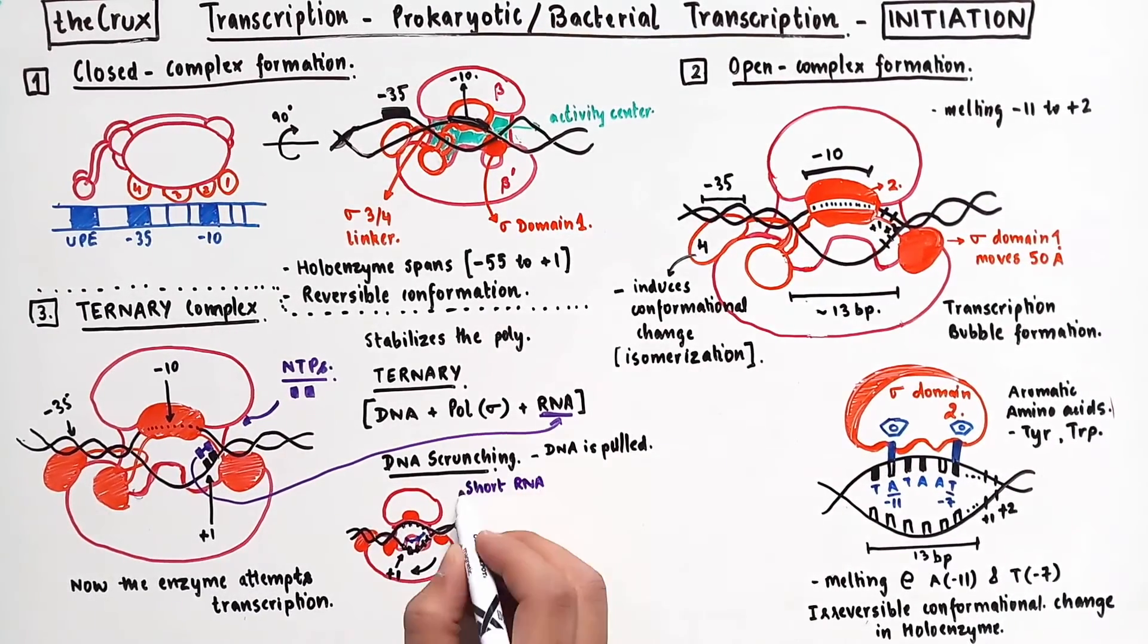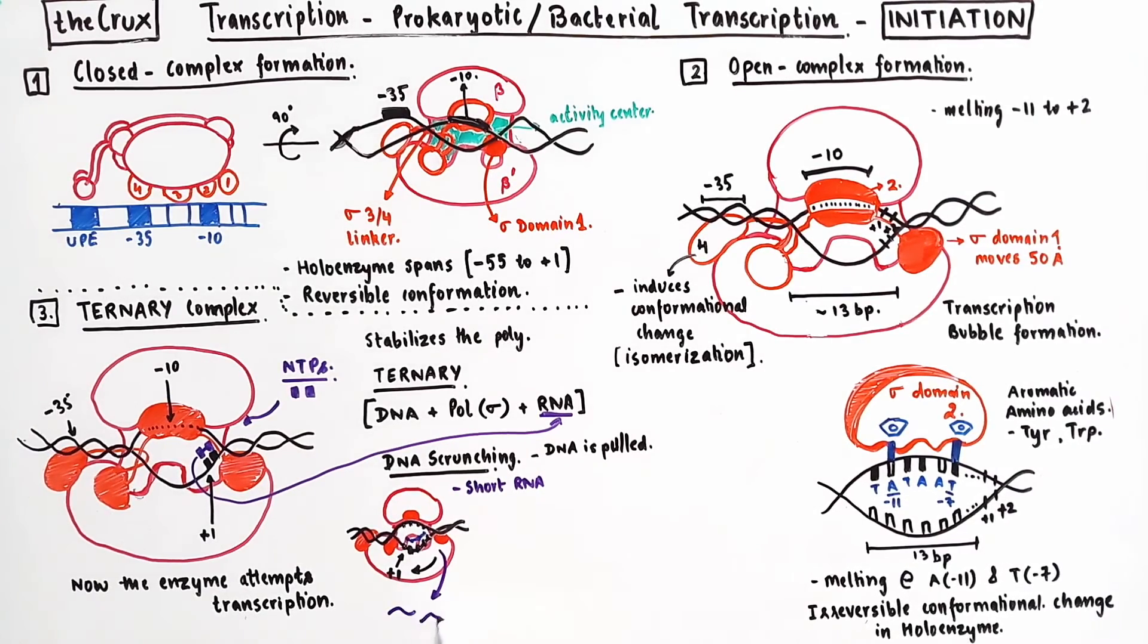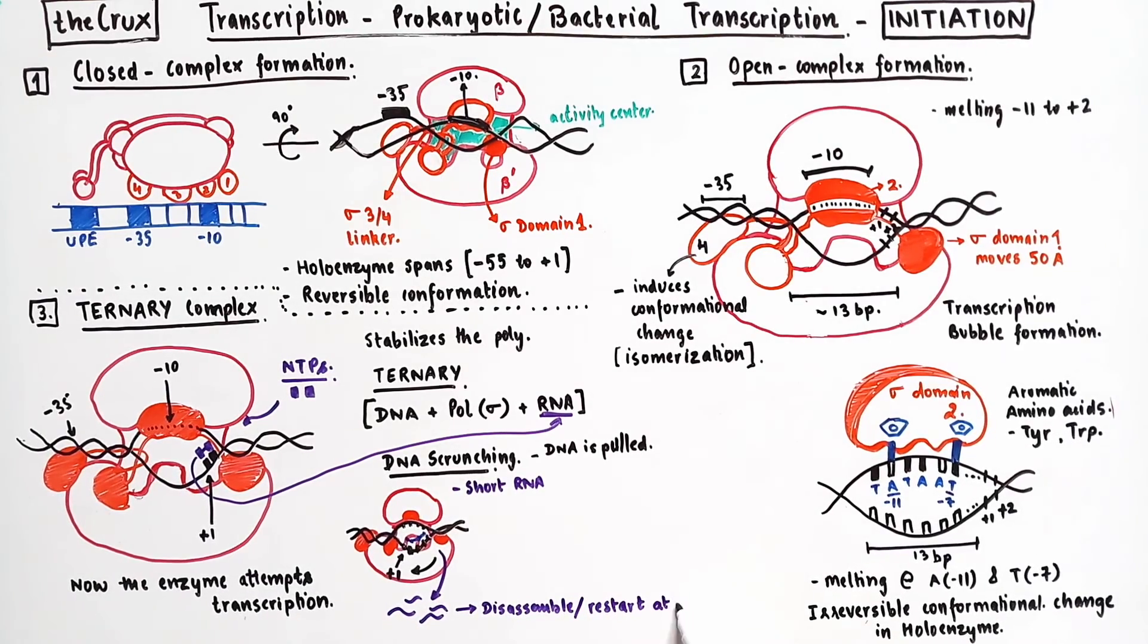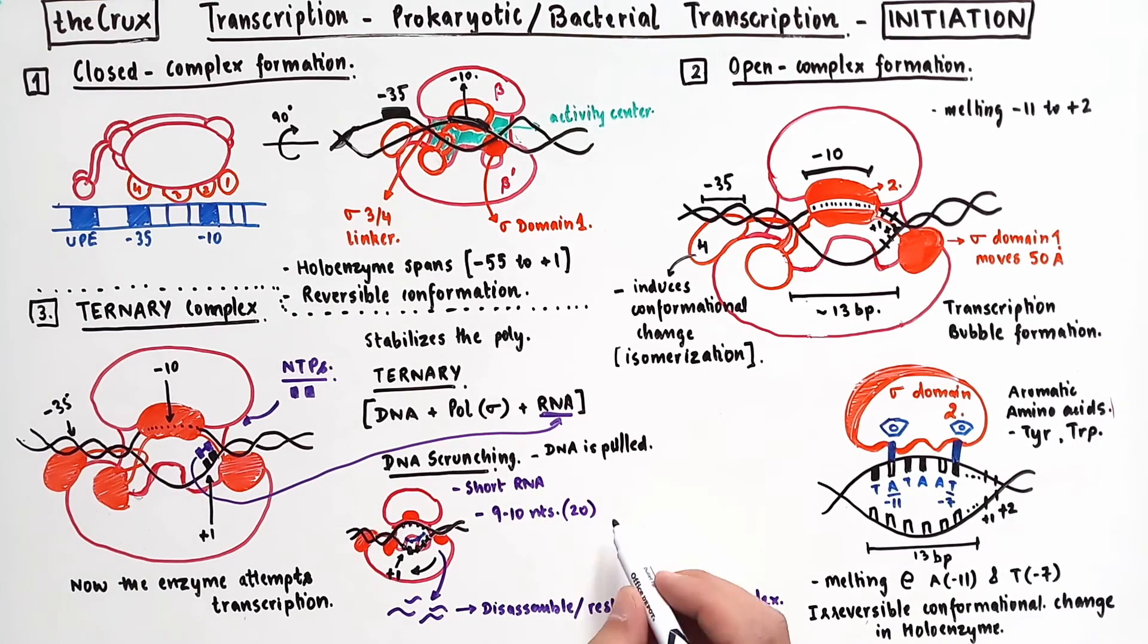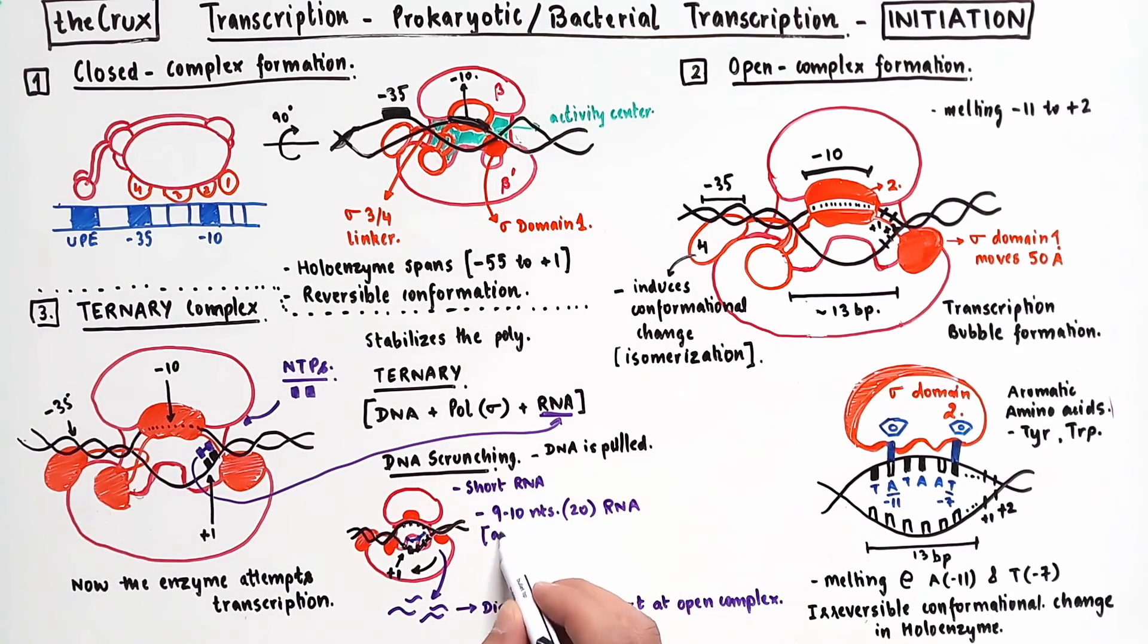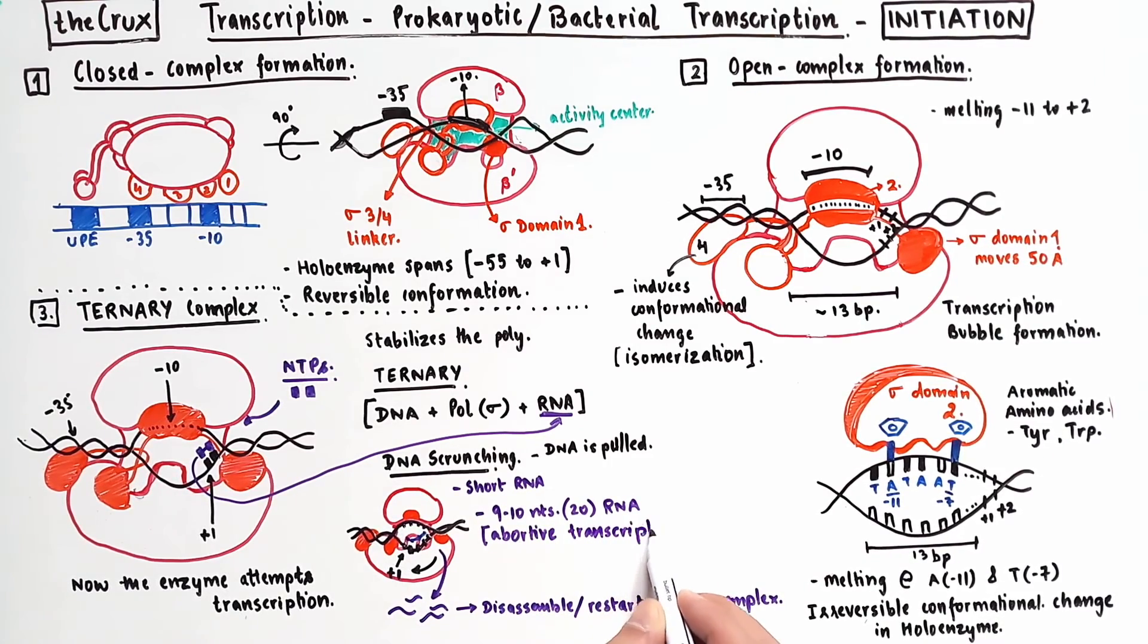So it restarts the entire process at the transcription bubble in an open complex. These short RNAs are usually about 9 to 10 nucleotides, but sometimes they can also be as long as 20 nucleotides. So this process of releasing short abortive RNAs as a result of failure to proceed is called the abortive transcription.